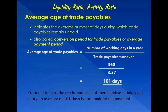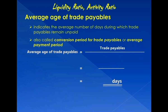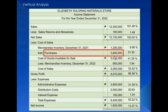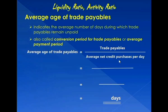In some textbooks, another formula is used to compute the average age of trade payables, and that is trade payables divided by the average net credit purchases per day. The trade payables of the entity at the end of 2022 consisted of its accounts payable of 630,000 pesos and trade notes payable amounting to 400,000 pesos, while its net credit purchases amounted to 3.8 million pesos.